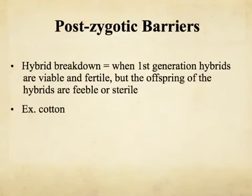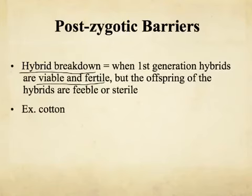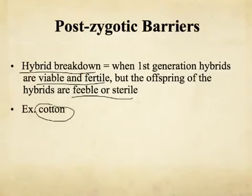The last example of postzygotic barriers is hybrid breakdown. This is when the first generation of hybrid offspring are pretty viable and fertile, but the offspring of those offspring are very feeble or sterile. Basically after a couple of generations, you start to get sterile individuals. This happens a lot when you cross different species of cotton — the first set of offspring are pretty good, but after that they break down quickly. Therefore those species of cotton are considered different species.